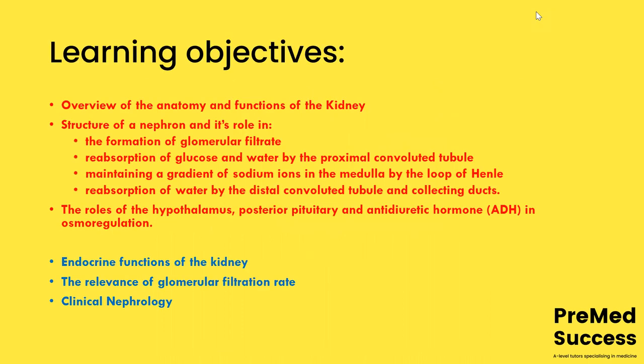The learning objectives in red are for A-levels, so you're expected to know: the overview of the anatomy and functions of the kidney, the structure of a nephron and its role in the formation of glomerular filtrate, reabsorption of glucose and water at the proximal convoluted tubule, maintaining a gradient of sodium ions in the medulla via the loop of Henle, and reabsorption of water by the distal convoluted tubule and collecting ducts — and in relation to that, the role of the hypothalamus, posterior pituitary, and antidiuretic hormone in osmoregulation.